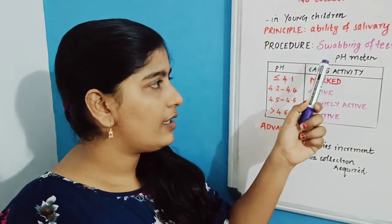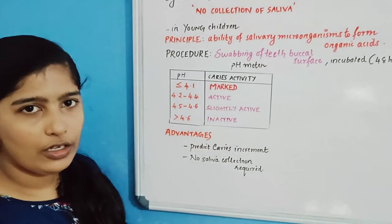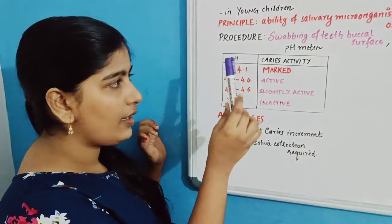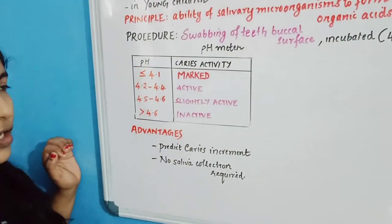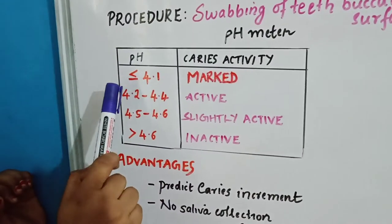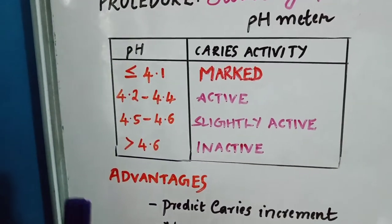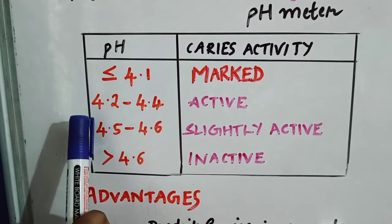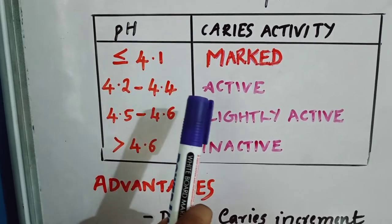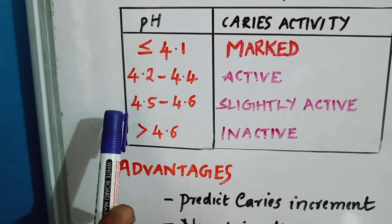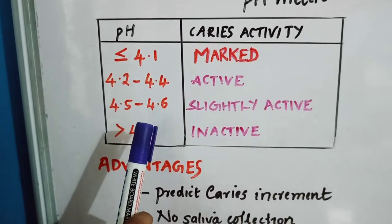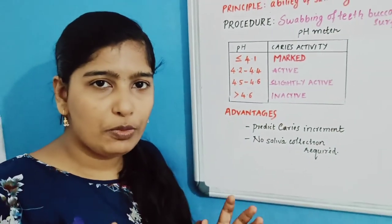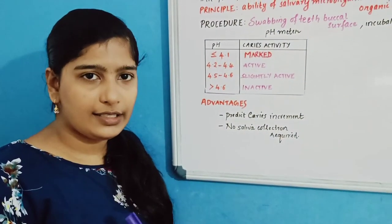The change in pH is read using a pH meter. The pH value obtained is connected to caries activity: a pH of less than or equal to 4.1 indicates marked caries activity; a pH of 4.2 to 4.4 is active; a pH between 4.5 and 4.6 is slightly active; and when the pH is more than 4.6, it is caries inactive.